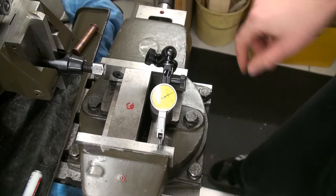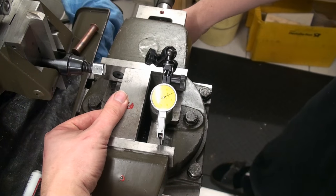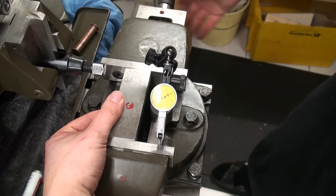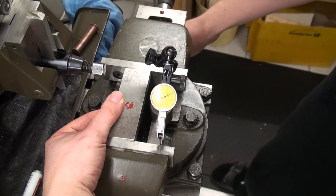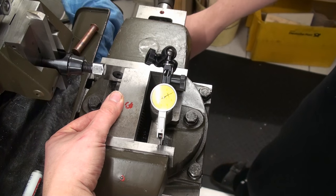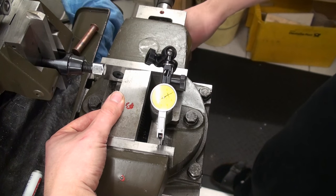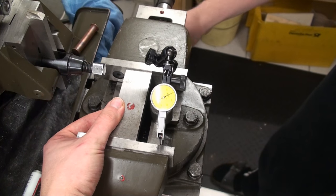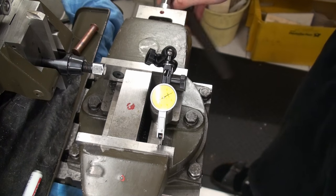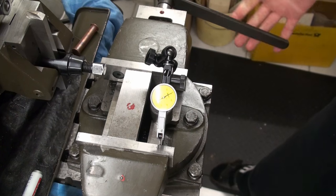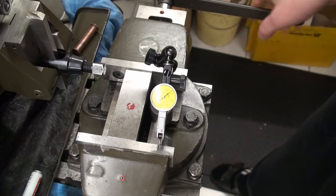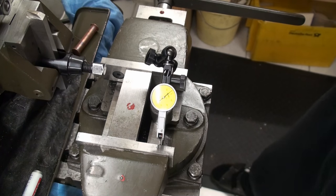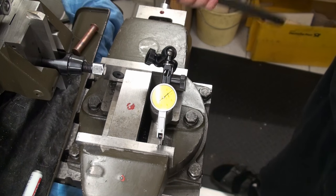Now we take this piece, clamp it, and even when I apply very light pressure, you already see the dial indicator move about one hundredth of a millimeter. And now when I apply normal pressure, see what happened? Three hundredths of a millimeter.